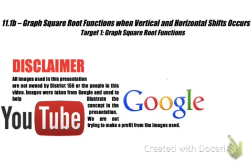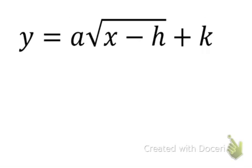In this video we're going to learn how to graph square root functions when there's a vertical and a horizontal shift. Let's take a look at the square root function. The parent would be y equals the square root of x, without the a, without a minus h, or without a plus k.